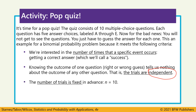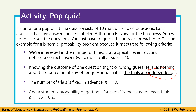We need to have a fixed number of trials — in this case, 10, because there are 10 questions we'll be guessing on. And lastly, we have to have a probability of success that stays the same for all trials. Since we're just guessing from five options, our probability of success is one out of five, or 0.2.